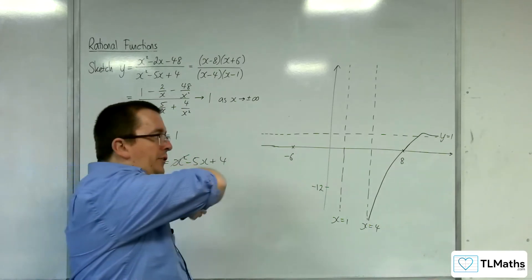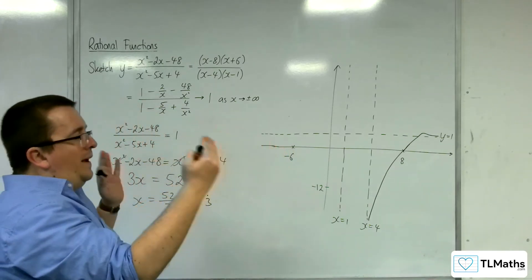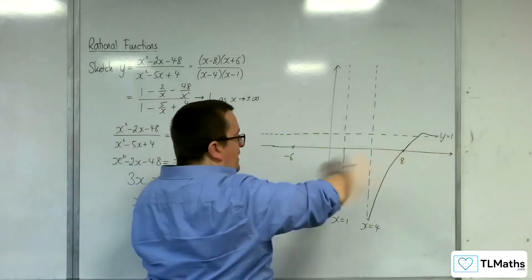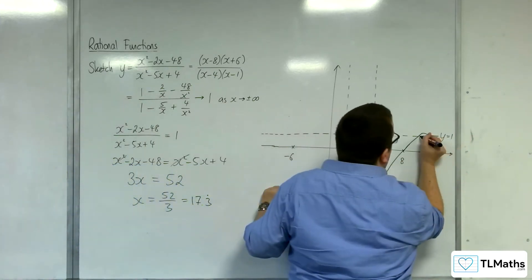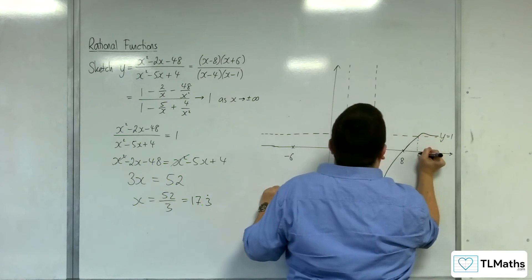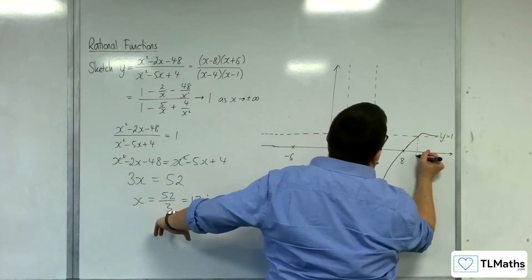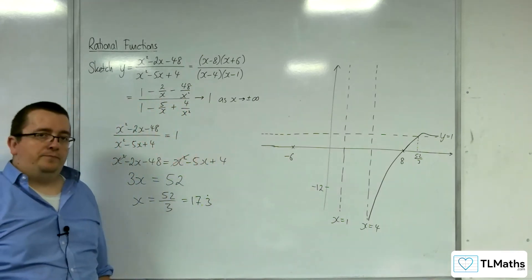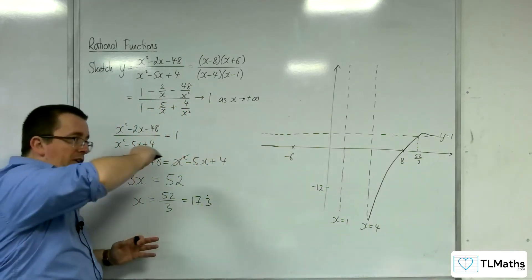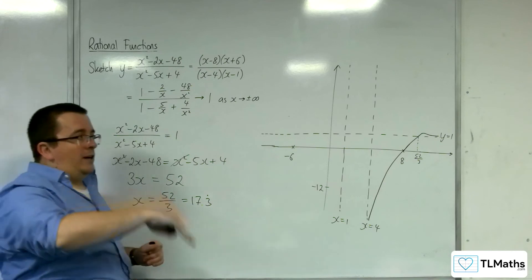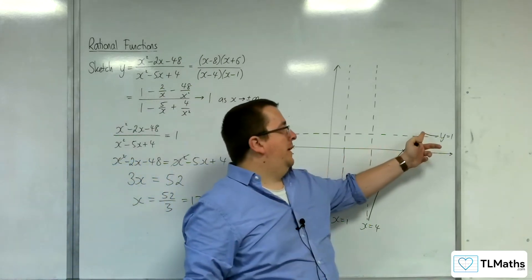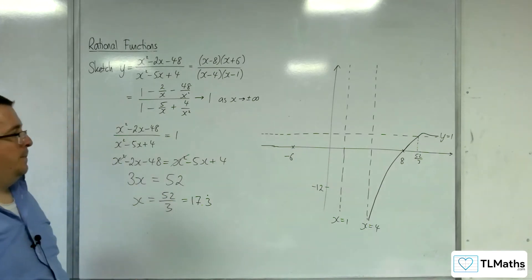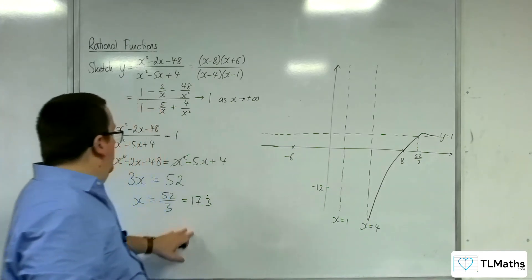So the way that I've had to sketch this is a bit kind of scrunched up. It'll be much more extended and smoother than that. But what that's telling you is at that point there, it crosses through the horizontal asymptote and then must come back on itself. So actually, that's telling you that there is a stationary point in that region, somewhere beyond 52 thirds.